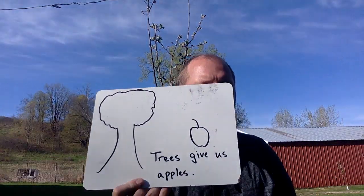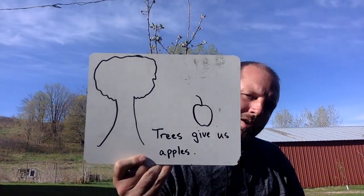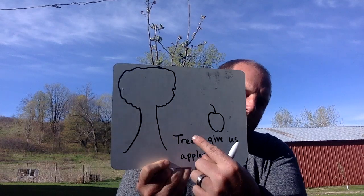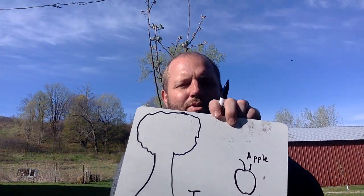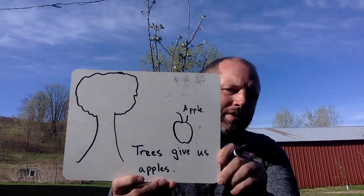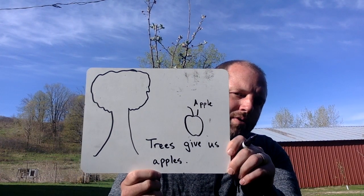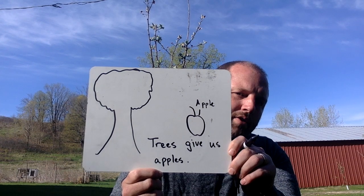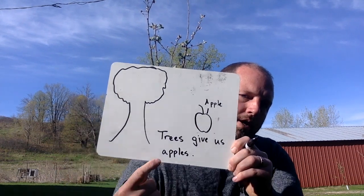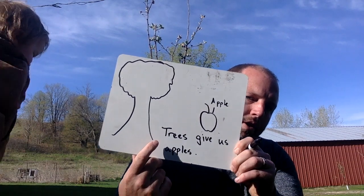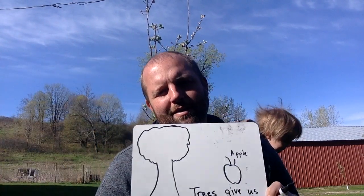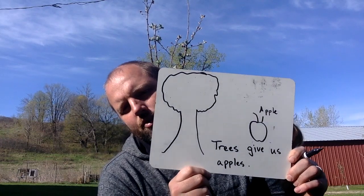Here's what I want you to do today: draw a picture of a tree and something that comes from a tree. Label what comes from the tree — for example, label it 'apple.' It's important to label things in our pictures so our readers and viewers know what's being drawn. I've written the sentence 'Trees give us apples' — that's the kind of sentence I want you to write.